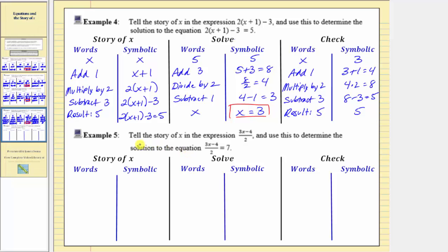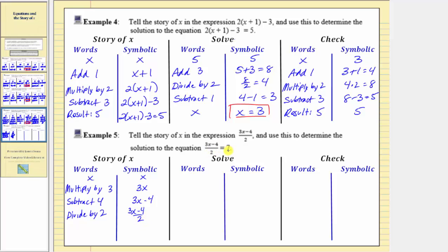Now for our last example, we're asked to tell the story of x for this expression to solve the given equation. We have the quantity three x minus four divided by two equals seven. So we begin with the story of x starting with x. Because of the three x, the first step is multiply by three. Because of three x minus four, the next step is subtract four, giving us the expression three x minus four. The fraction bar means division, so the next step is to divide by two, giving us the equation three x minus four divided by two equals seven.